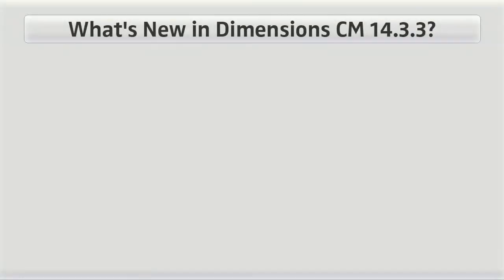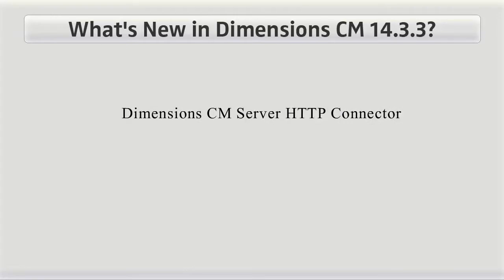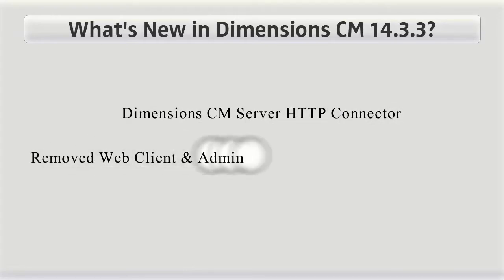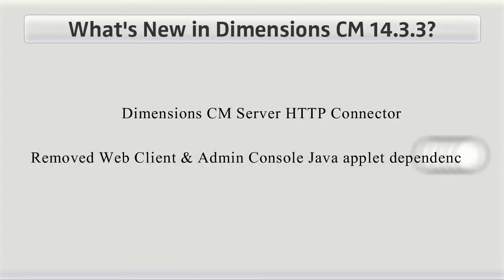Dimensions CM 14.3.3 implements numerous new fixes and features. There are three major themes for this release: the Dimensions CM Server HTTP connector, and the removal of the web client and admin console Java applet dependencies.